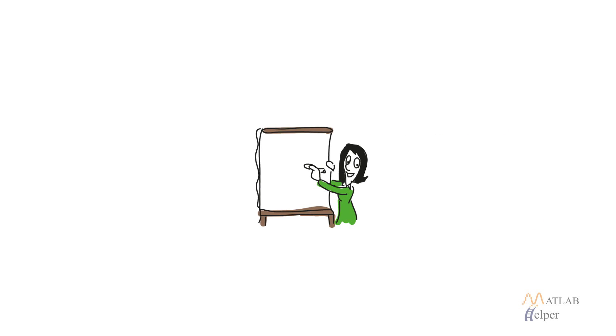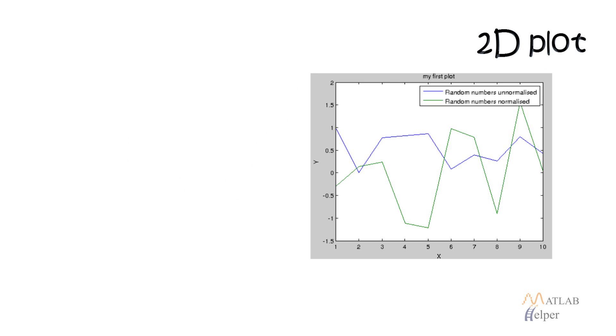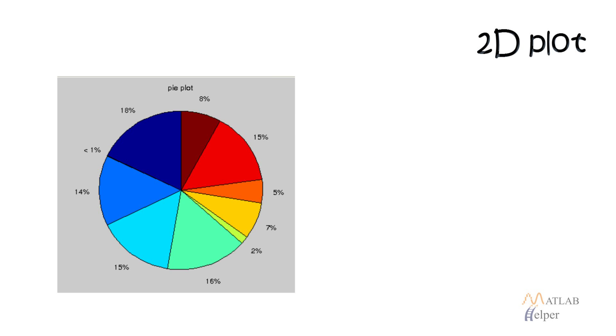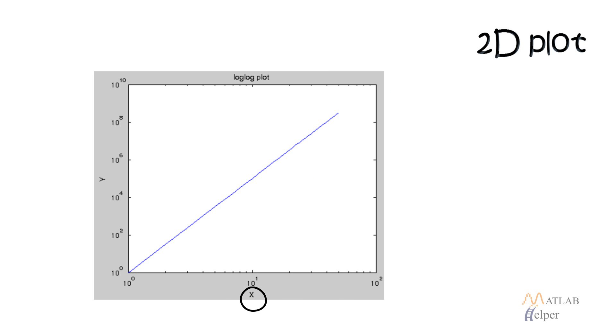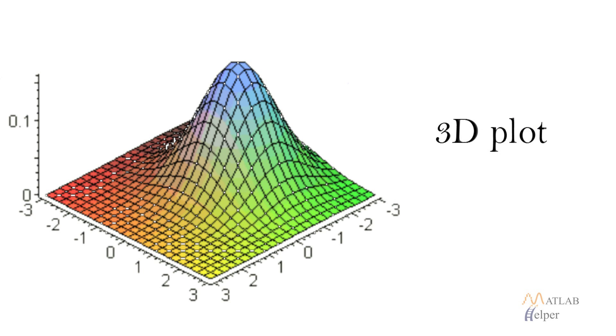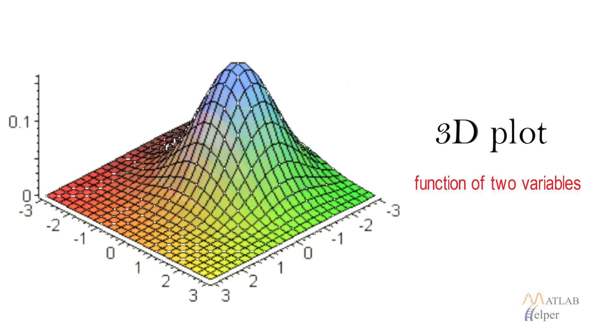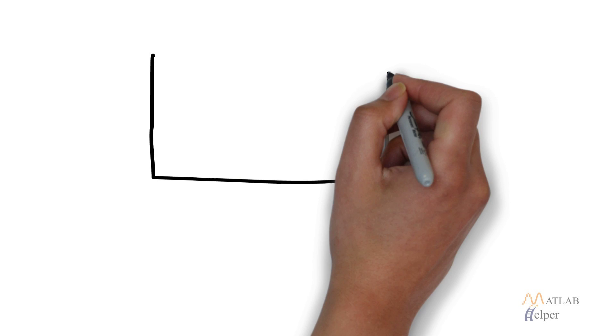In the previous tutorial, we saw how we can visualize two-dimensional data, where there are two variables and one is the function of the other. We can also visualize data that is in the form of three-dimensional coordinates, or a function of two variables.